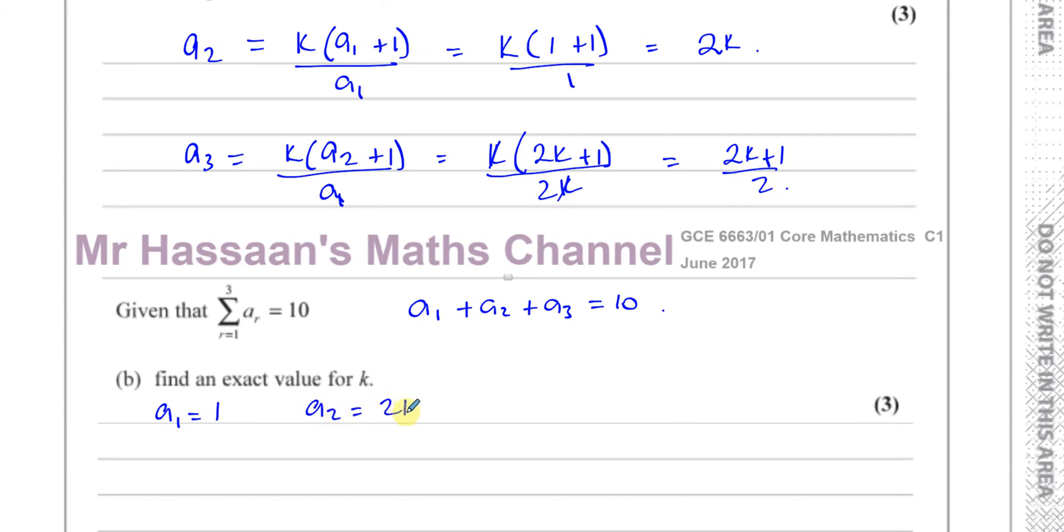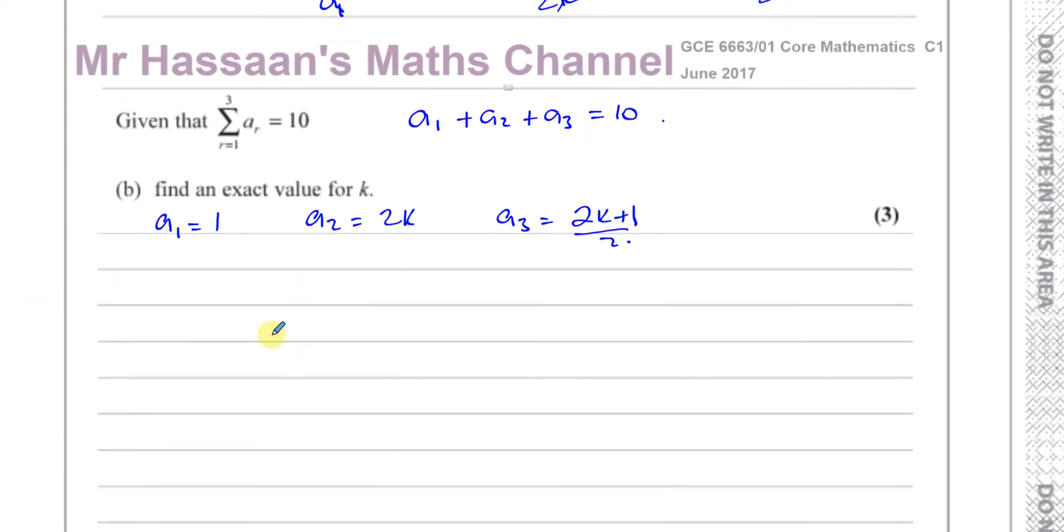And a2 is equal to 2k and a3 is equal to 2k plus 1 over 2. So if we put them into this formula here we know that the sum of these is equal to 10. So we have 1 plus 2k plus 2k plus 1 over 2 is equal to 10. That's what this means here, the first term, the second term and the third term, add them together you get 10.